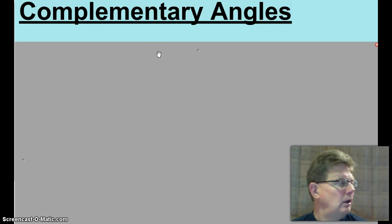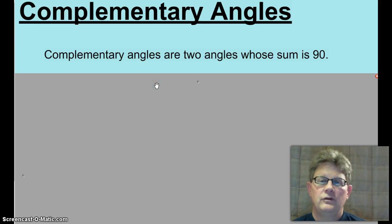The first pair of angles are complementary angles. They are two angles whose sum is 90. Please don't tell me they equal 90 because those would be right angles.